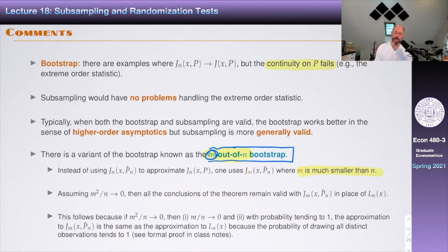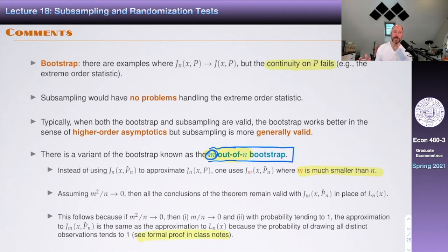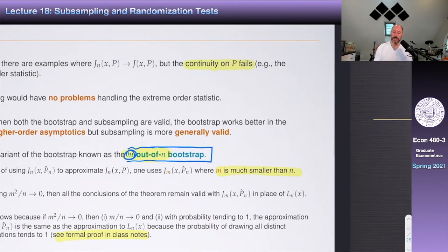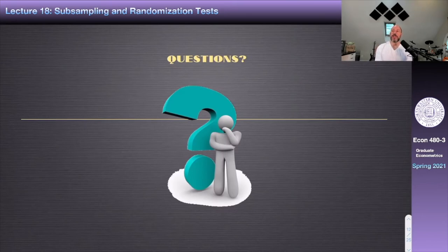You can show that the probability of having ties is not an issue when M-squared over N goes to zero. The only difference between m-out-of-n bootstrap and subsampling (assuming B and N are the same) is that one samples with replacement, the other without, and the argument showing this doesn't matter involves counting. That's all I have to say about subsampling.